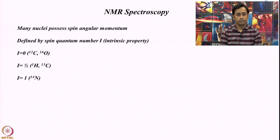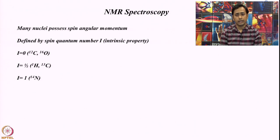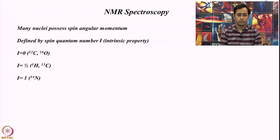The spin quantum number can have different values — it can be 0, it can be an integer value, or it can be a number like 1/2 or 3/2. The actual value of i depends on how many neutrons and protons are present inside the nucleus. If a nucleus has an even atomic number and mass number, it typically gives an overall spin quantum number of 0, but if it deviates from that, we can have different non-zero i values.